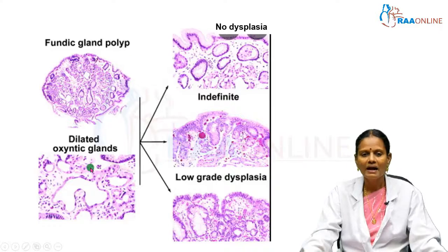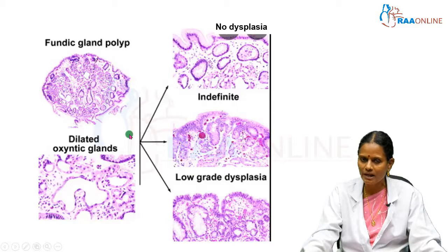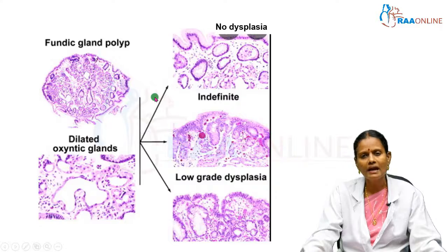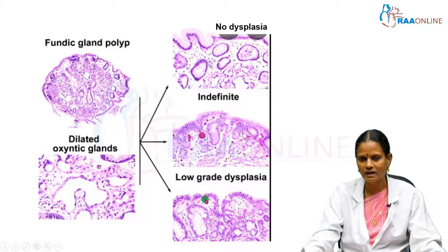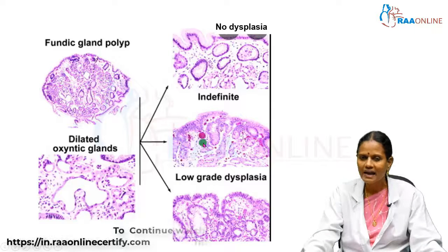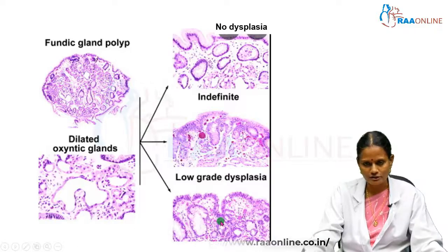This is a fundic gland polyp with dilated glands of the body lined predominantly by parietal or chief cells. If associated with familial adenomatous polyposis, there is an increasing risk of dysplasia. Here is a picture showing no dysplasia, here mild dysplasia with glandular architectural abnormalities and stratification of nuclei, and here cases indefinite for dysplasia where we cannot dogmatically say dysplasia is present. Here there is low-grade dysplasia with focal crowding of glands and stratification of nuclei.